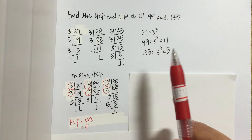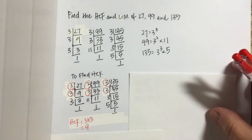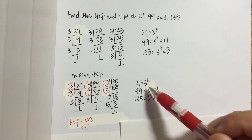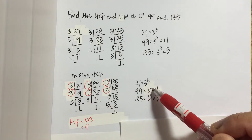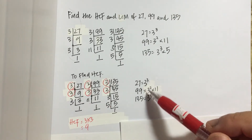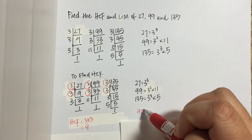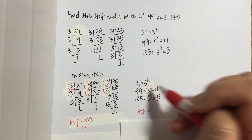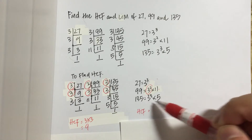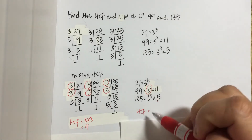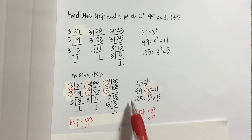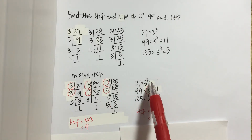On the other hand, if we already have numbers expressed in index notation, we can view it in this manner. We have 3², 3 to more than 2, and 3 to more than 2. Something that is common would be 3 squared. Similarly, 11 does not appear in all three, and 5 only appears in one. Therefore there's no other common factor, and HCF is 3 squared, which gives us 9.